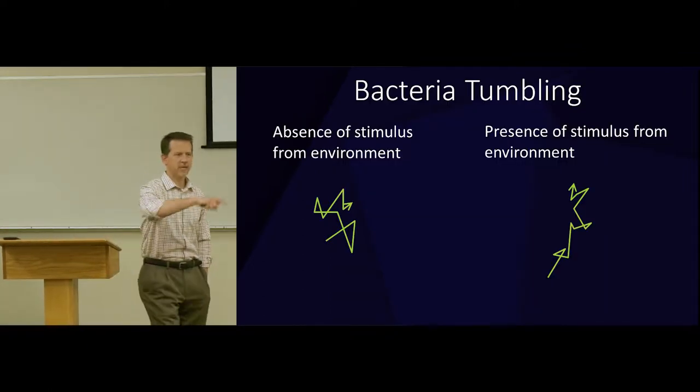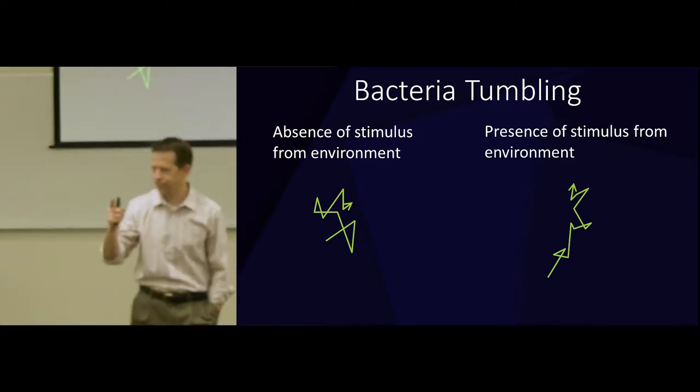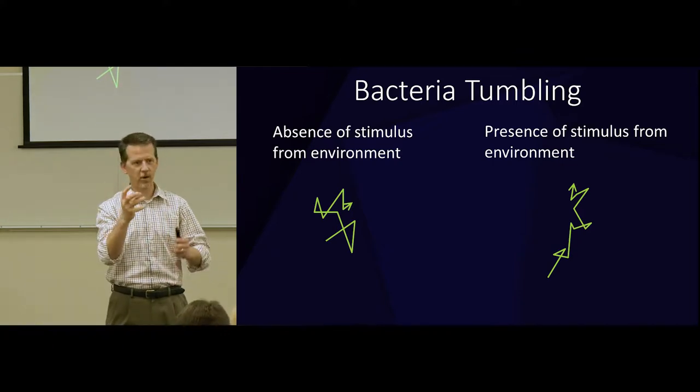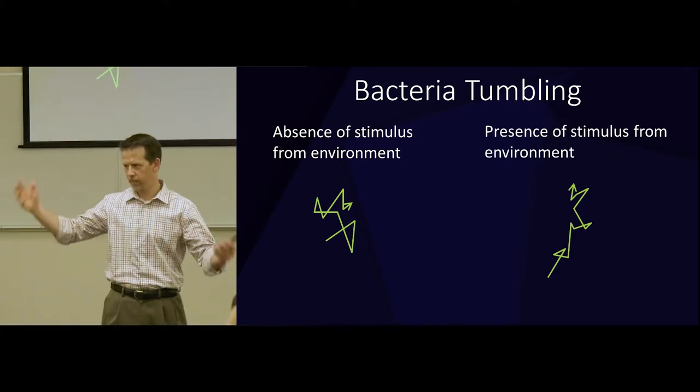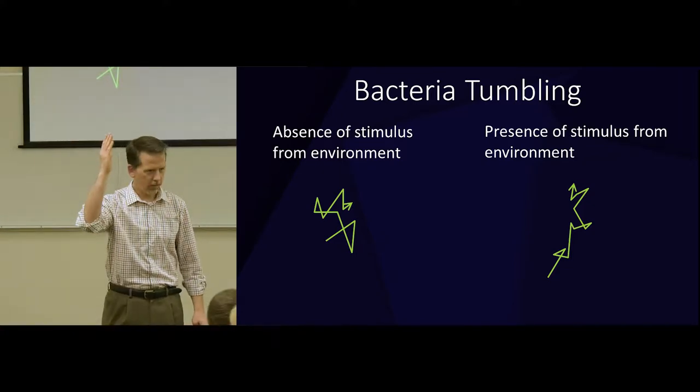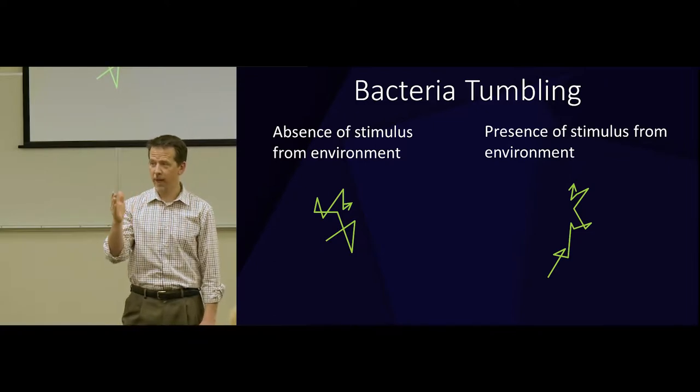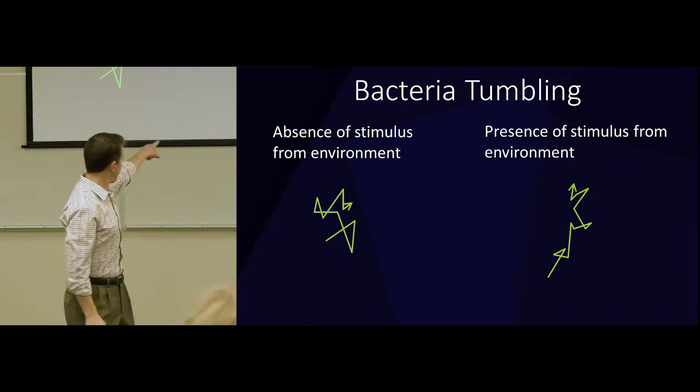Without any stimulus, these guys just sort of swim around. They have a little tail, a little flagellum kind of tail thing, and they'll swim. And every once in a while they'll swim in a direction, then they stop. They float in three dimensional space, and they start swimming again. And it's just random. Wherever they're pointing, that's where they go. In the presence of light, either good or bad, they're going to swim more in one direction or the other, either away from it or towards it.